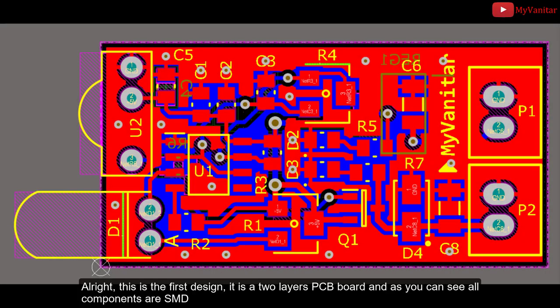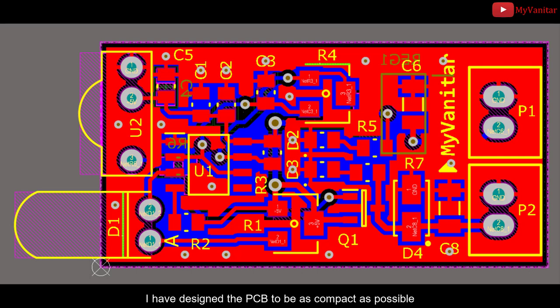All right, this is the first design. It is a two layers PCB board and as you can see all components are SMD. I have designed the PCB to be as compact as possible. Majority of the components except two or three of them are on the top layer.